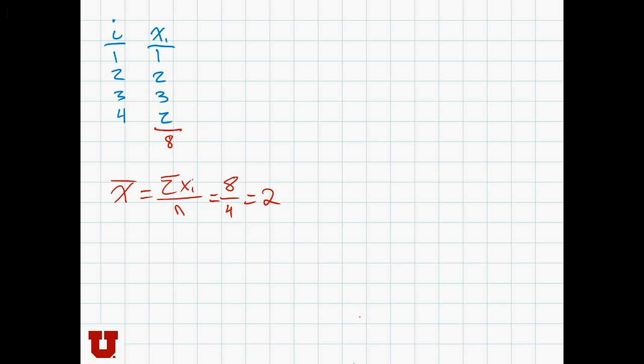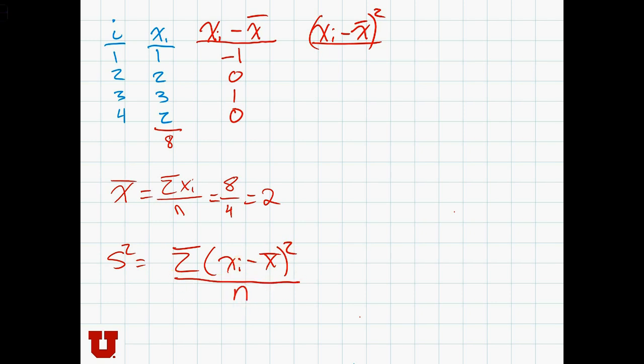The next step is to calculate the deviation, xi minus x bar. X bar is 2, so we get minus 1, 0, 1, 0. Then we're going to need the square deviations. Because recall that variance equals the sum of the square deviations over n. So the square deviations are 1, 0, 1, 0.